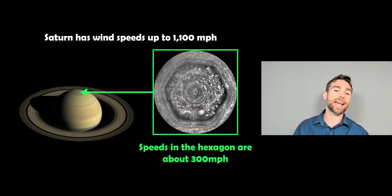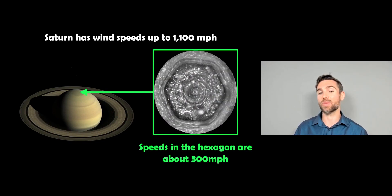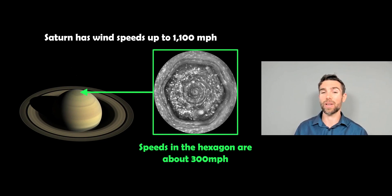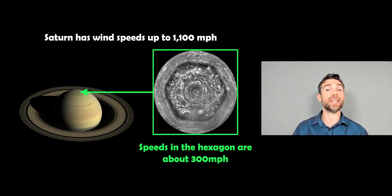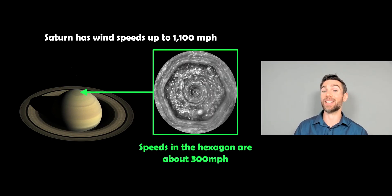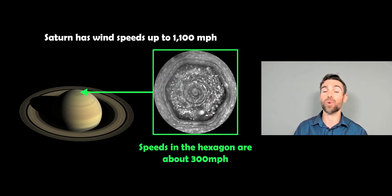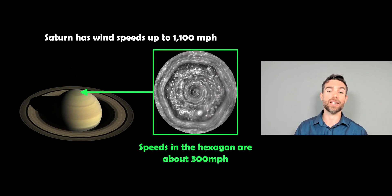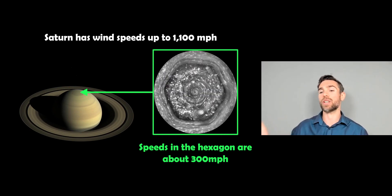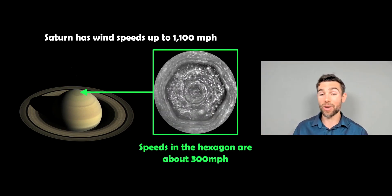Now, if we go to Saturn, Saturn's the next one out and the next smallest, second largest really, has a ring as well, which we're quite familiar with. But Saturn has wind speeds that can approach 1,100 miles per hour. That's getting quite fast now. That's considerable wind you've got on that planet. Similar sort of idea. Saturn has these sort of jet streams as well, has storms on there, a bit like Jupiter.